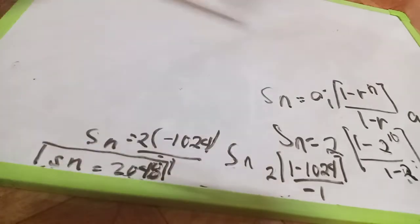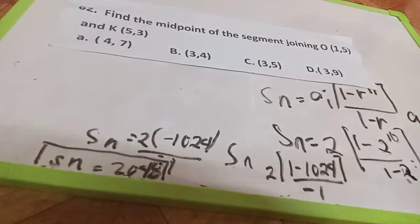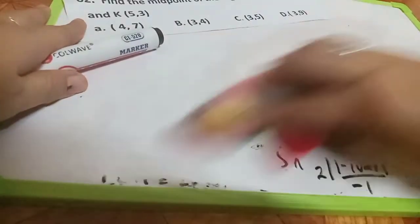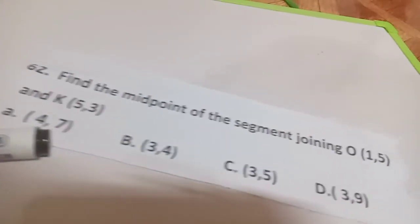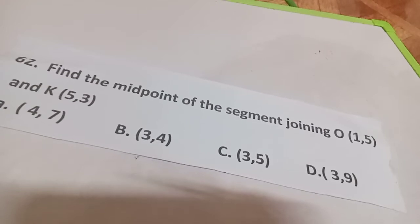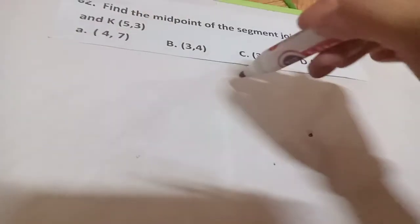Number 62: Find the midpoint of the segment joining (0, 1) and (5, 5, 3) — that is, points with coordinates O at (1) and K at (5, 3). Let's set up the X and Y axes and plot the points.